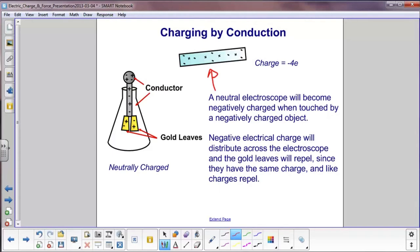So it will start at the conductor at the top, at the sphere, spread out down until it reaches the gold leaves, and then each gold leaf will have a net negative charge. Since they both have the same charge, we will expect them to repel each other.